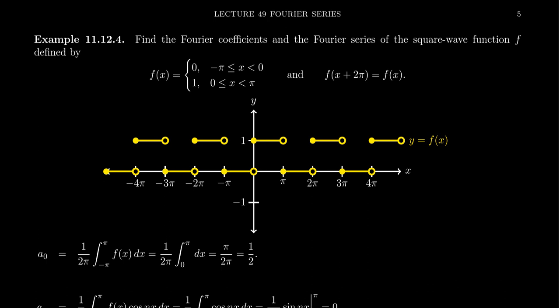If you add in lines for these jump discontinuities, the function looks like a wave — but with square bumps, which would be kind of weird if the ocean did that. It's a perfectly good wave function. Some people call this the square-tooth saw because it's like the teeth of a saw, but the teeth come to squares as opposed to points. Anyway, we have our square wave function.